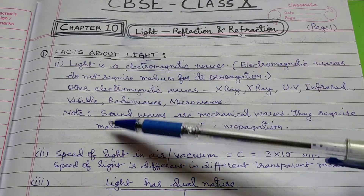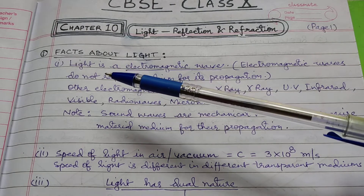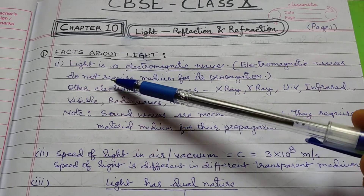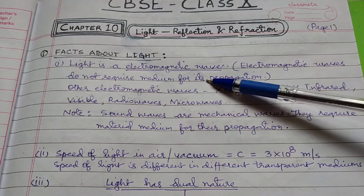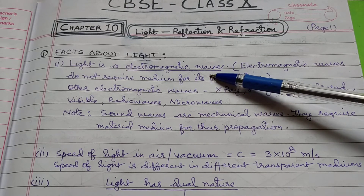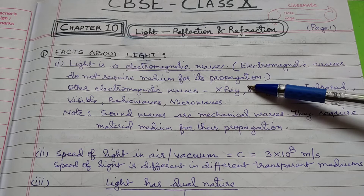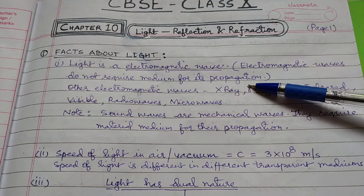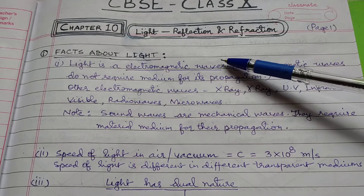There are certain facts about light which we have jotted down in point form and we'll discuss them one by one. The very first point is that light is an electromagnetic wave. It's a kind of wave that does not require any material media for its propagation. When light travels from sun to earth, there is no medium in between, which confirms that light does not require any material media for propagation.